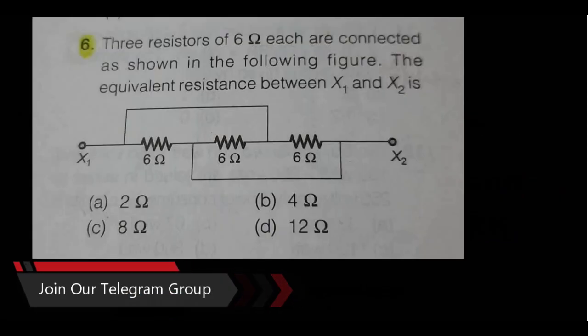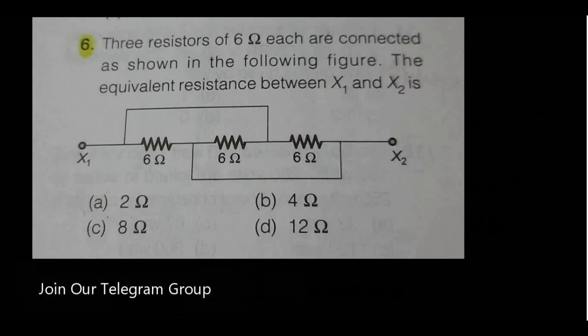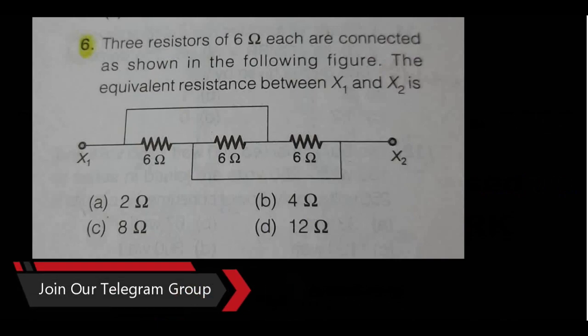Three resistors of six ohm each are connected as shown in the following figure. The equivalent resistance between X1 and X2 is. So we have three resistors and we have to find what is the equivalent resistance between X1 and X2.